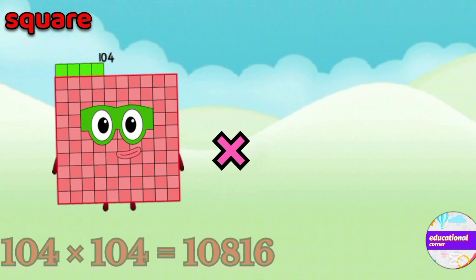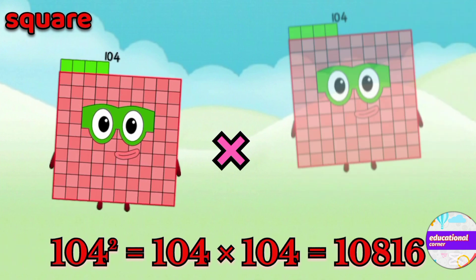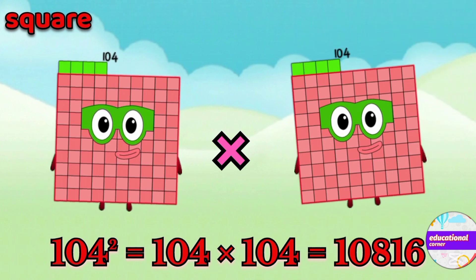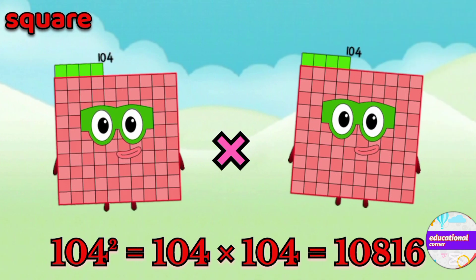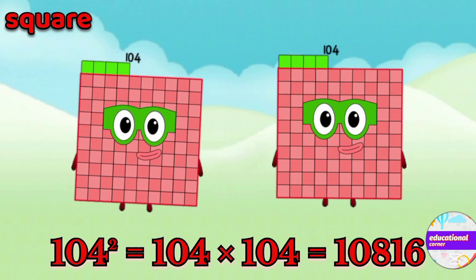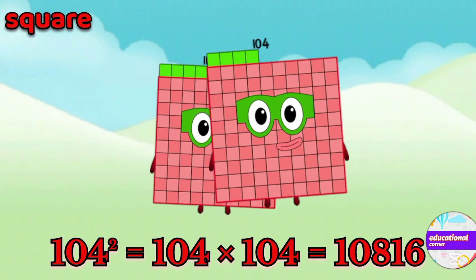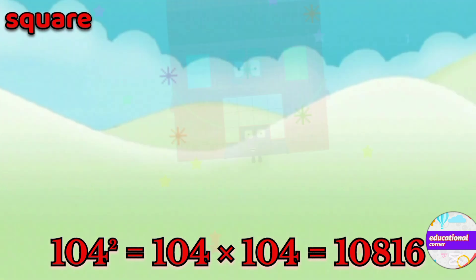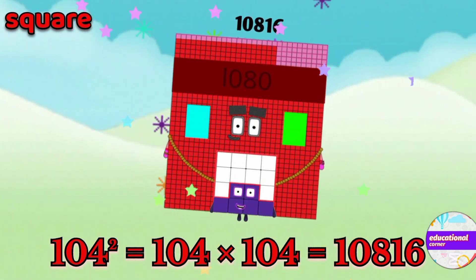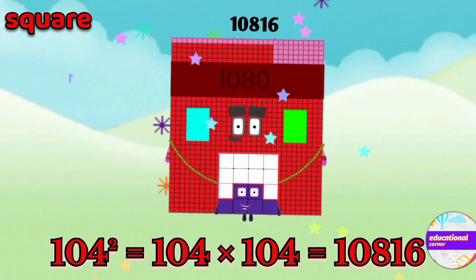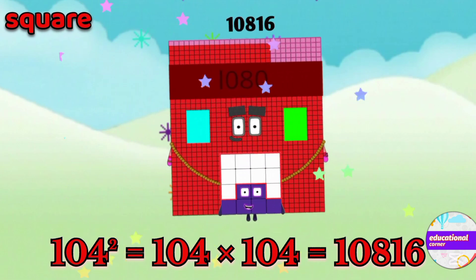104 multiply by 104, so the square of 104 is ten thousand eight hundred and sixteen.